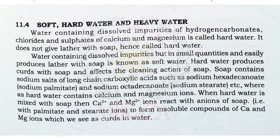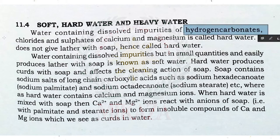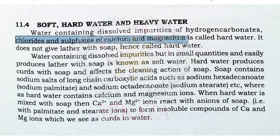If we put soap in hard water, it will not make bubbles and will not produce lather. Water which doesn't make lather with soap is known as hard water, because of the presence of hydrogen carbonates, chlorides, and sulfates of calcium and magnesium — calcium chloride, calcium sulfate, magnesium sulfate, magnesium chloride. It does not give lather with soap, hence it is called hard water.